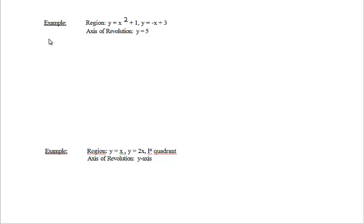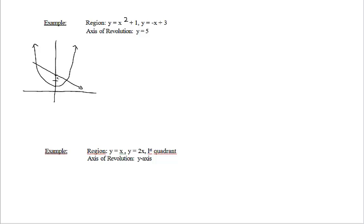Let's look at the next example. We see it's the same region. What's changed is the axis of revolution. Now the axis of revolution is the horizontal line y equals 5. At this point of intersection the y coordinate is 5, so we have a horizontal axis of revolution at y equals 5. The axis of revolution is on top of our bounded region down here.